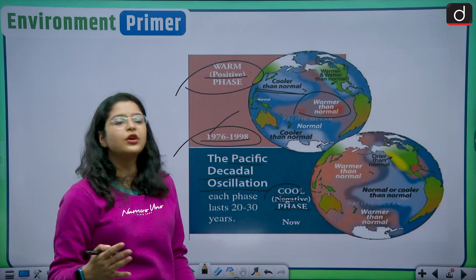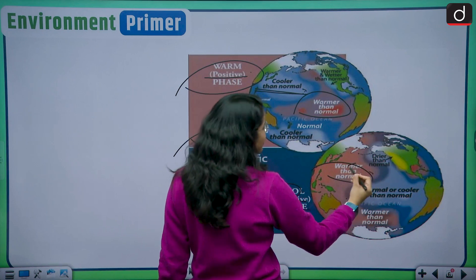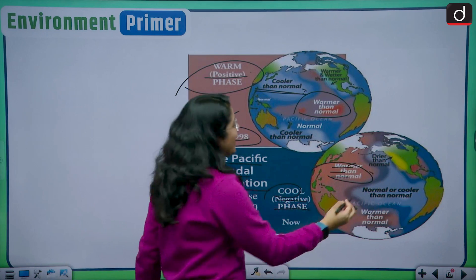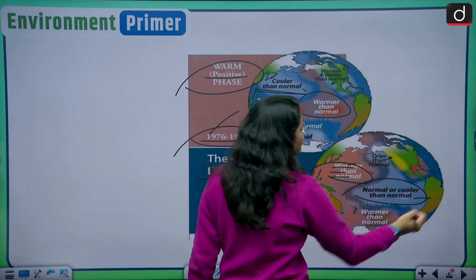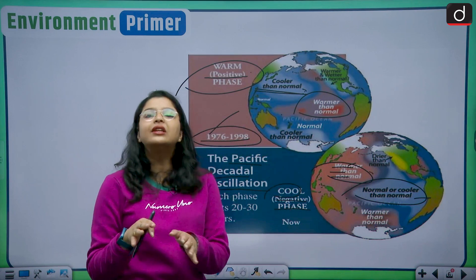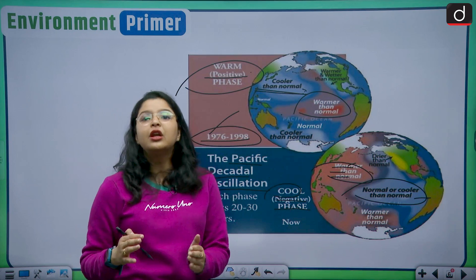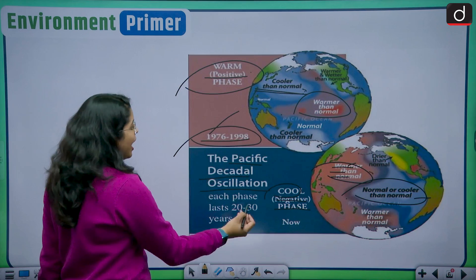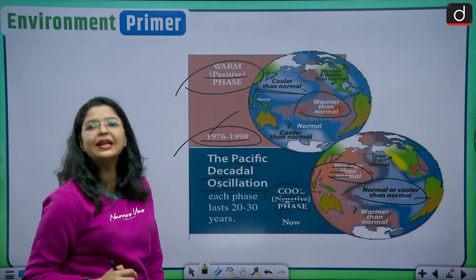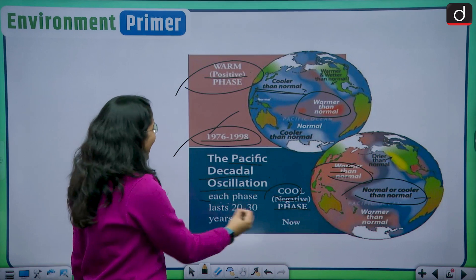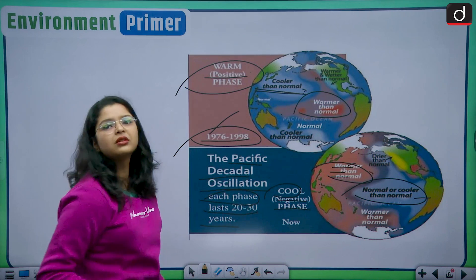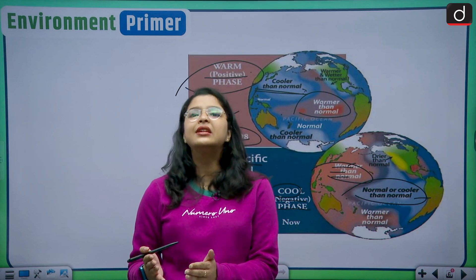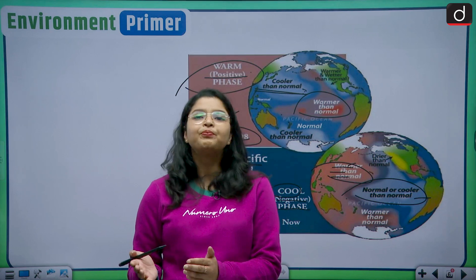Currently we are in the cooler or negative phase of the PDO. In the cooler phase the weather pattern is reversed: temperatures generally remain warmer than normal in the Asiatic region, which includes India, and become normal or cooler than normal in the regions around North America and the Pacific Ocean. We have been in this cooler phase since 2019, and due to this we are going to witness an increased number of cyclones in tropical regions near the equator.